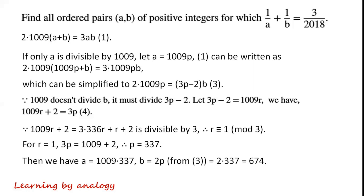Then A = 1009 × 337 and B = 2p from equation 3, which gives B = 2 × 337 = 674.